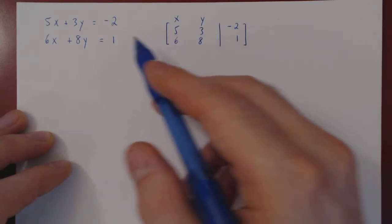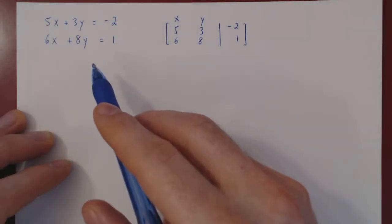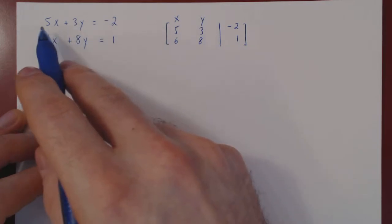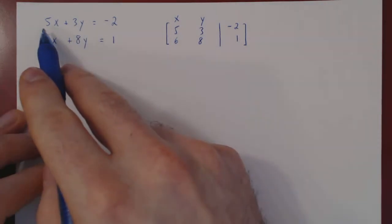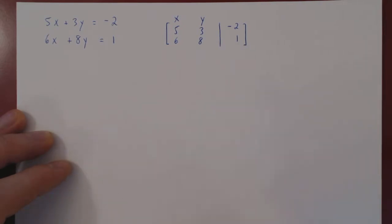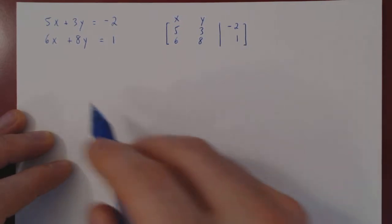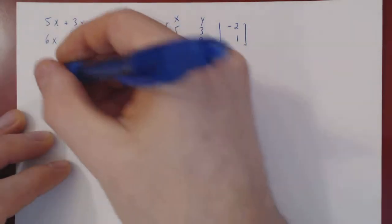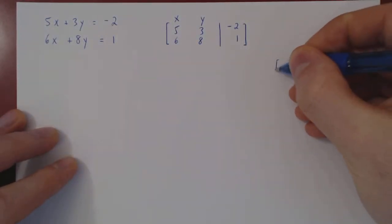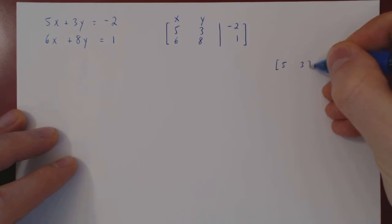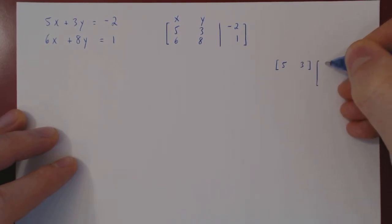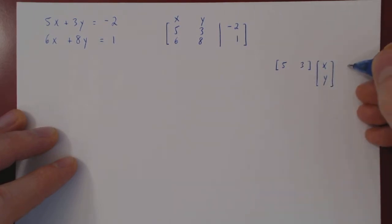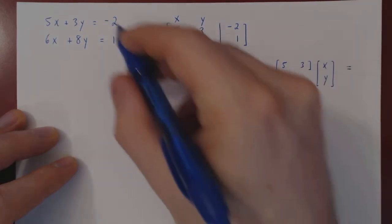Let's find a different way to look at a linear system. Look at the left-hand side — it looks like a row times a column matrix. If you remember how we multiply a row times a column, we multiply corresponding entries and add them up. So 5 times x plus 3 times y looks like a row 5, 3 times the column x, y. The result, 5x plus 3y, would be a 1 by 1 matrix equal to negative 2.